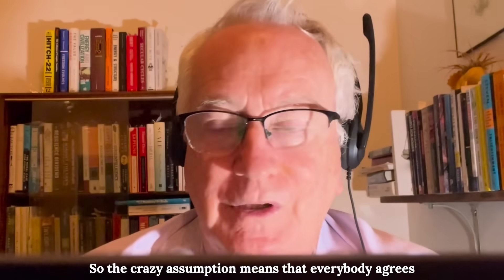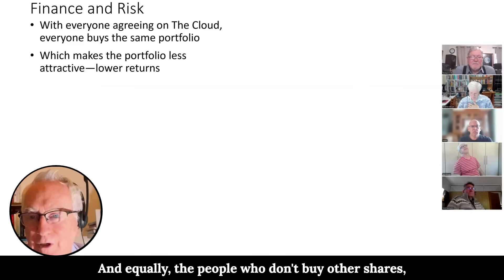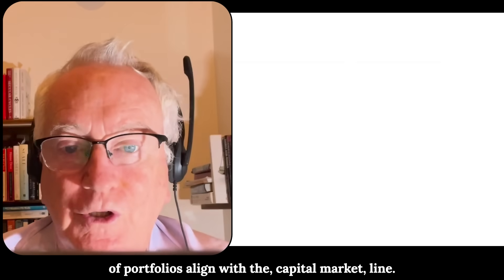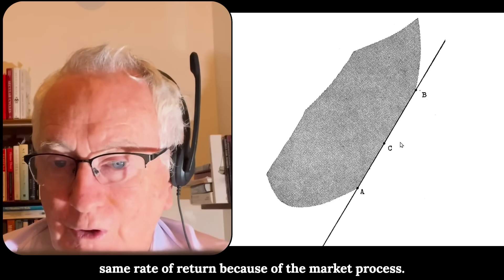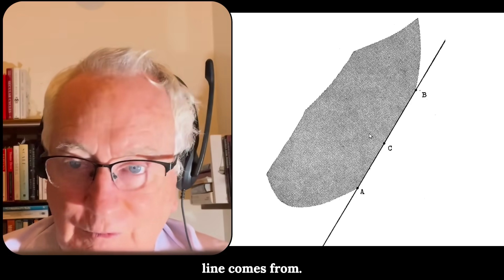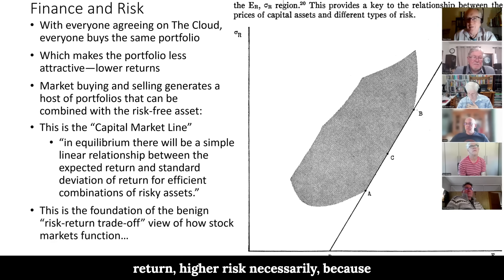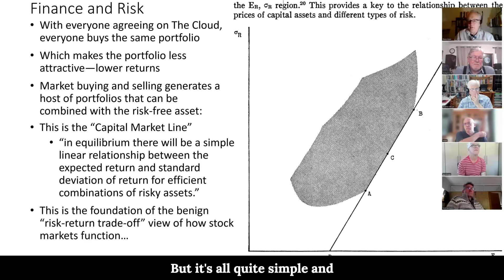So the crazy assumption means that everybody agrees on the cloud. So everybody buys the same portfolio and that makes that portfolio more expensive, which reduces its return. And equally though, people who don't buy other shares, the price falls. So you get a jiggling of prices. And what actually happens is finally a whole range of portfolios align with the capital market line. So you can choose portfolio A or B, C or B and get the same rate of return because of the market process. So there's a whole range of portfolios now that'll give you the tangent to the market line. And that's where the capital market line comes from. That's this particular part of the theory. And what he says, and equally, there'll be a simple linear relationship between expected return and standard deviation. That's where the idea came from. Higher return, higher risk necessarily, because of a bunch of crazy assumptions about how stock markets actually behave. So this is where the idea that you have a benign view of stock markets, there's a risk return trade-off. If you want a higher return, you've got to put up with higher risk, but it's all quite simple and rational and in equilibrium.